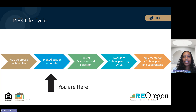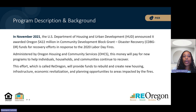Currently in the program, we have allocated funds to eligible counties and will begin to evaluate and select projects as they are submitted, followed by awarding subrecipients, and then subrecipients will implement their projects. These funds are part of a $422 million CDBG disaster recovery effort in response to the 2020 Labor Day fires and will be administered by OHCS. In addition to the PEER Program, the funds will also be used for homeowner and renter assistance, among other programs.